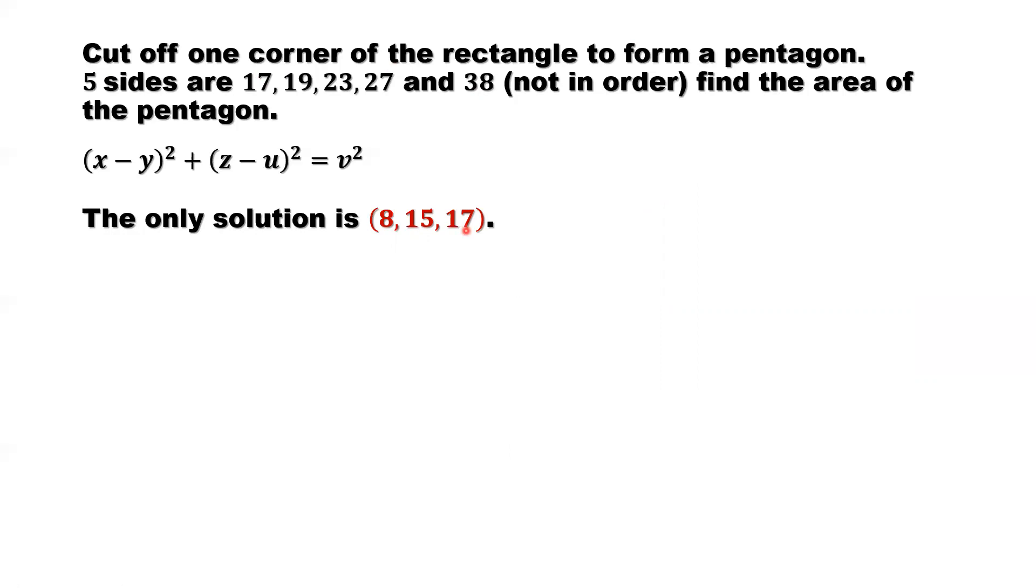So what can we imply? For the little triangle, the hypotenuse is the smallest value. This implies 38 and 27, the largest two numbers, are the size of the rectangle. That means this size must be 38 and this size must be 27.